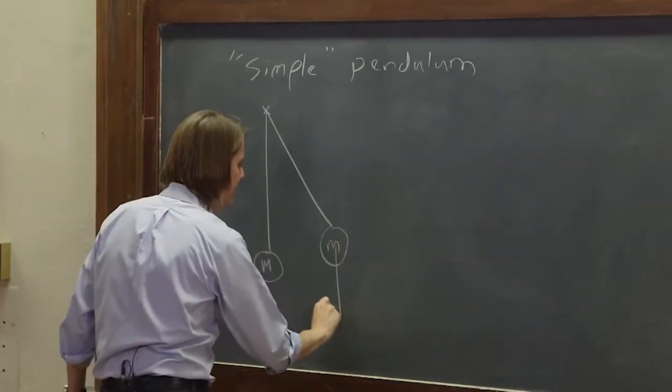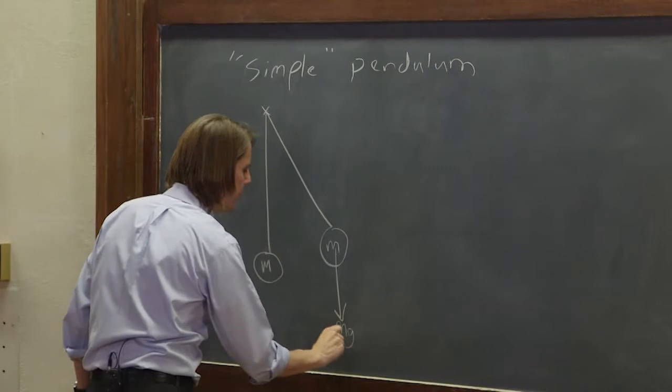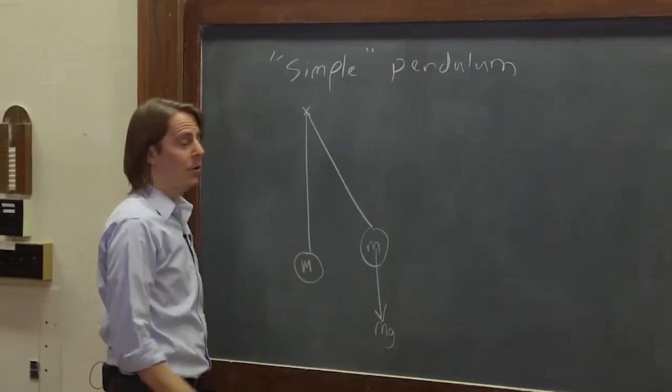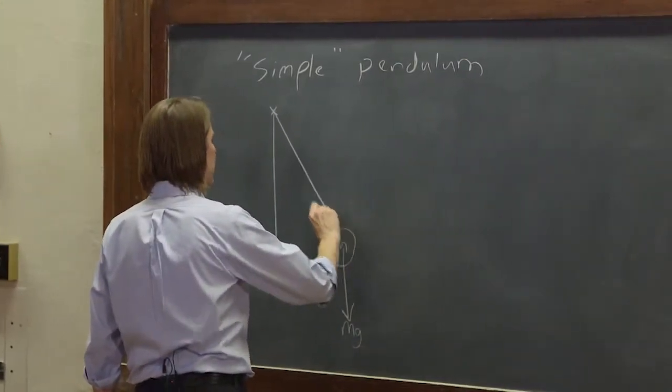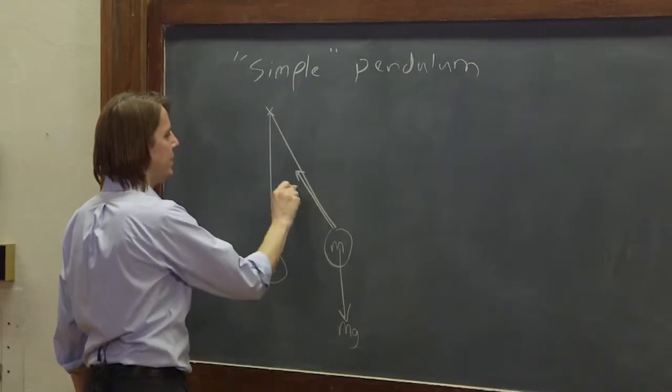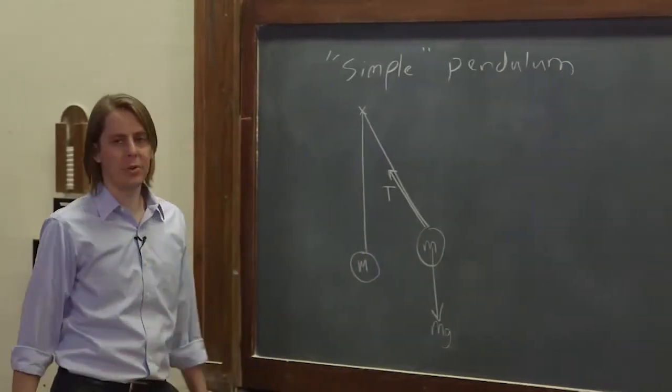Well, it's got mg going straight down, as always, and it doesn't fall because there's tension in the rod. So it's got tension pulling it up. That's really the only two forces there.